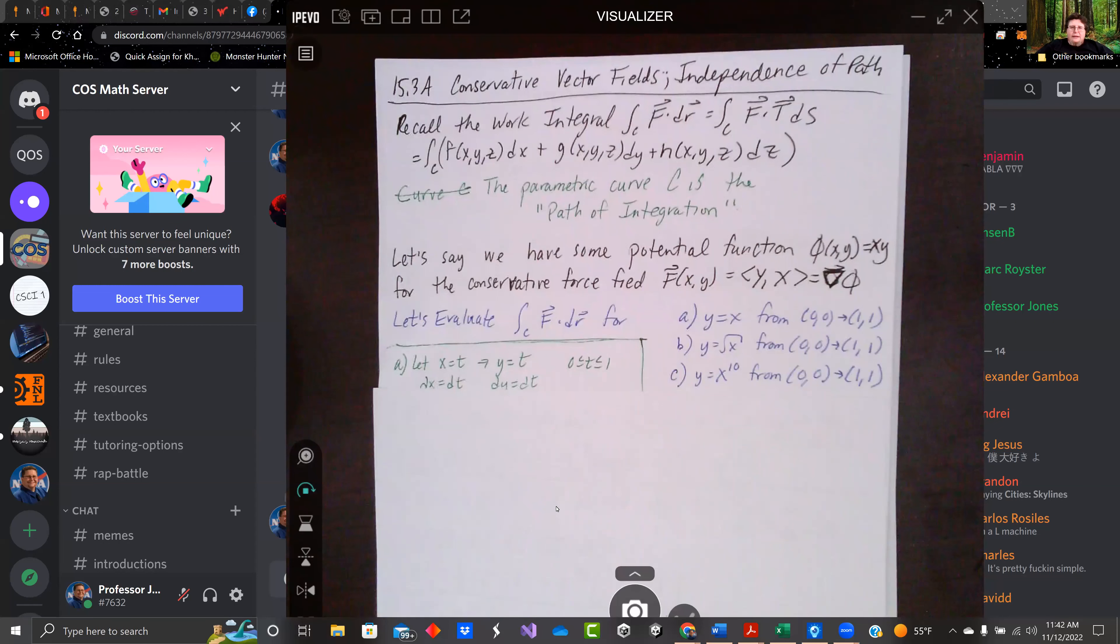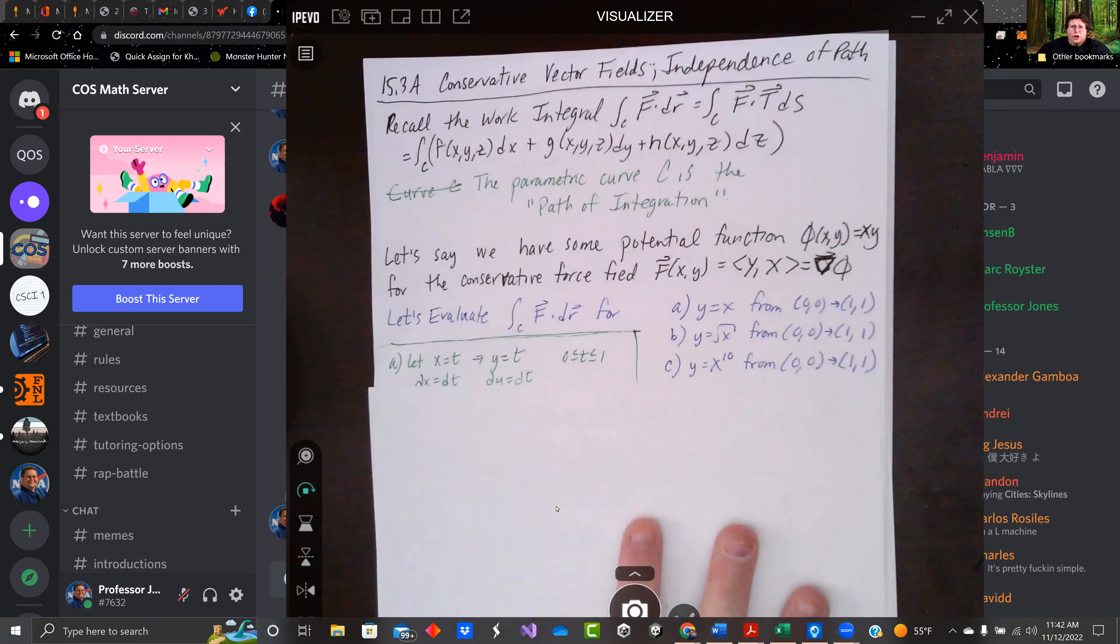Hey there, everybody. Welcome back. We're starting 15.3 in Calculus 3. This is on conservative vector fields and independence of path for a line integral. Let's get started.